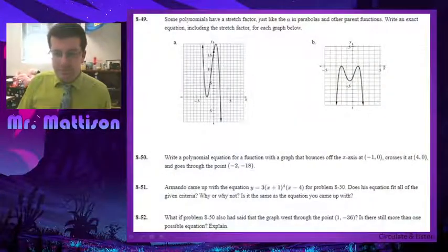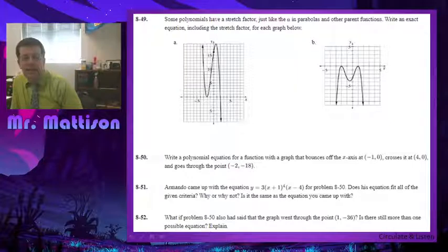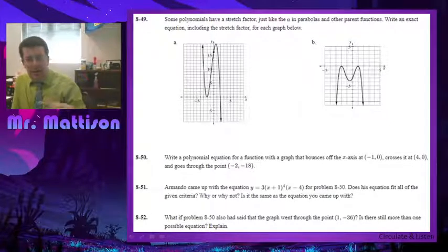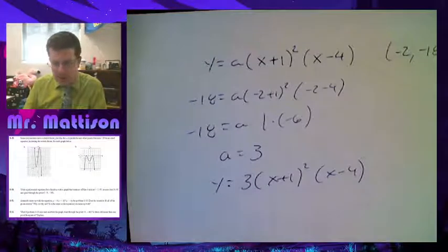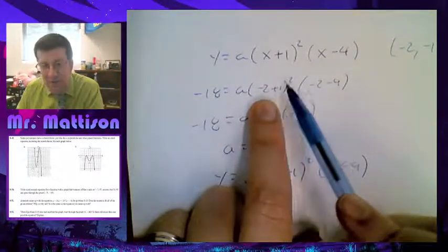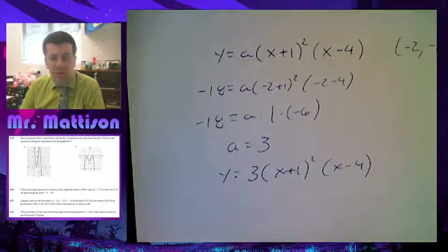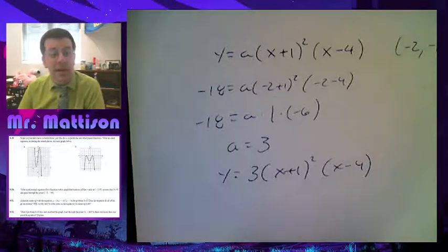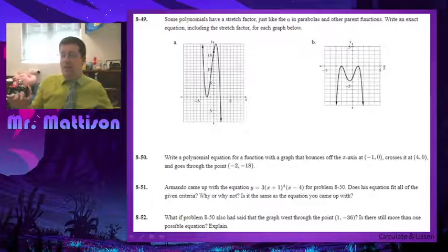But then, let's take a look at number 51. So, 51 is saying Armando got the equation 3 times x plus 1 to the 4th times x minus 4. Which is different than ours. Ours is x plus 1 squared. Does his meet all of the criteria? Well, does it bounce at negative 1? Yeah, because 2 to the 4th power will also bounce. Does it cross at 4? Yeah. And then, does it meet the criteria? Well, if I plug in a negative 2 in for his, if I plug in a negative 2 here, and then I got negative 1 to the 4th power as opposed to 2 to the 2nd power, it's still going to be 1. So, I would still get 3. So, this would be the same thing here, but to the 4th power. So, that one would work too.